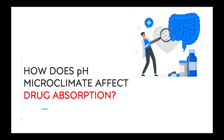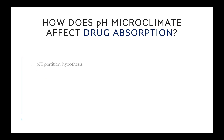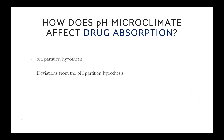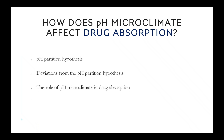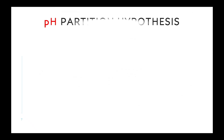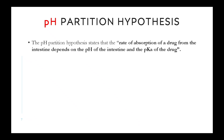How does pH microclimate affect drug absorption? Under this heading, there are three sub-parts: pH partition hypothesis, deviations from the pH partition hypothesis, and the role of pH microclimate in drug absorption. The pH partition hypothesis states that the rate of absorption of a drug from the intestine depends on the pH of the intestine and the pKa of the drug.